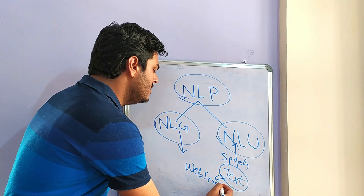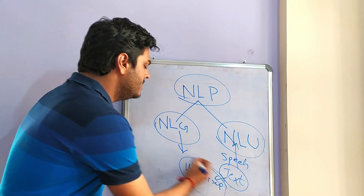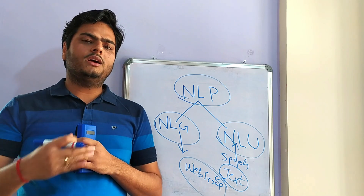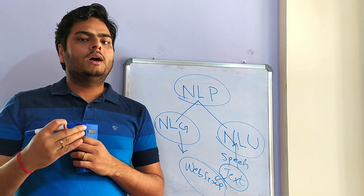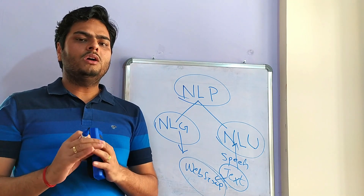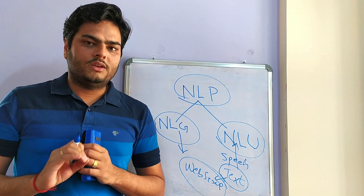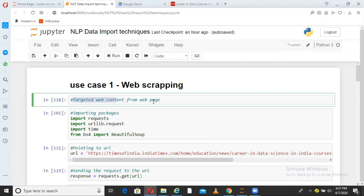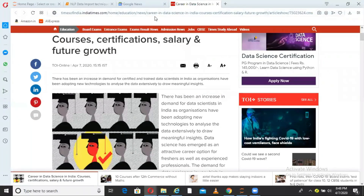What is web scraping? Web scraping is nothing but getting the data you need from a web page on the internet. I will take a news article from Times of India and show you how you can extract that article from a live web page using Python. Let's start a simple example of how to fetch targeted web content from a web page.